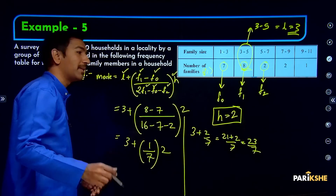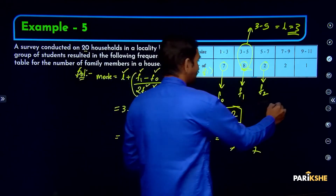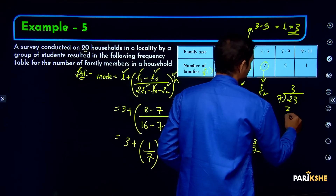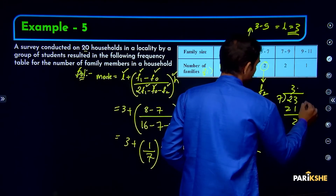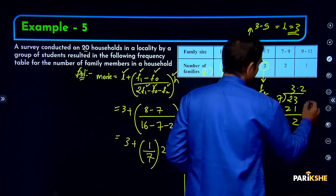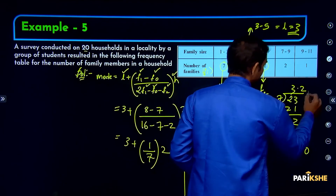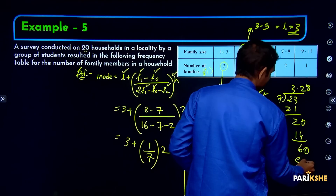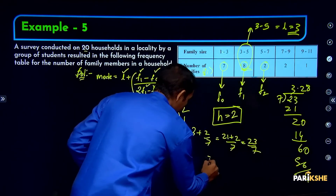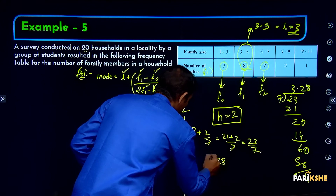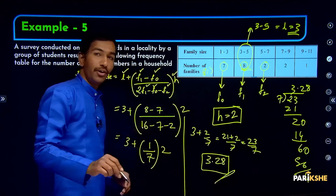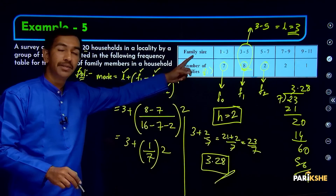23 divided by 7: 7 times 3 is 21, remainder 2; 0.2 — 7 times 2 is 14, remainder 6; 7 times 8 is 56, remainder 4. So the result is approximately 3.28. Therefore, 3.28 is the mode for the given grouped data.